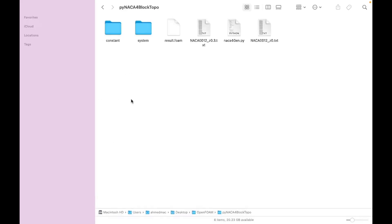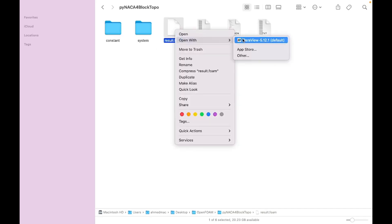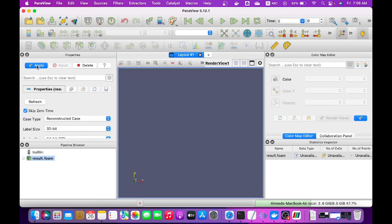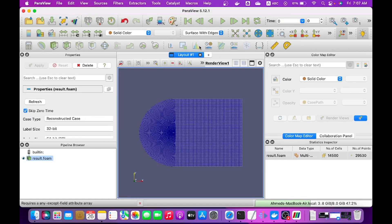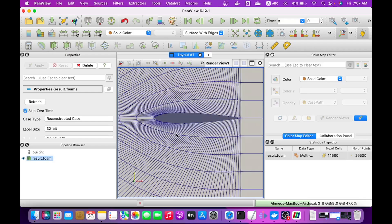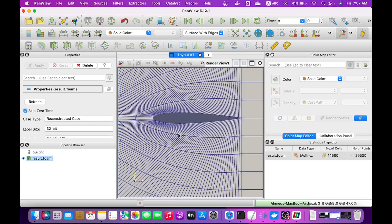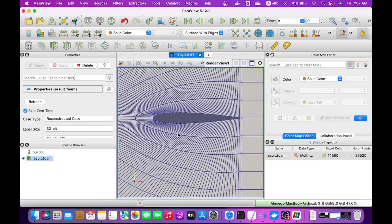Once it's finished, open the resulting .foam file in ParaView. Click apply and zoom in to inspect your mesh. At this stage the mesh is ready but it still needs refinement and boundary layer inflation. We will cover this improvement together in part 2 of this tutorial series.